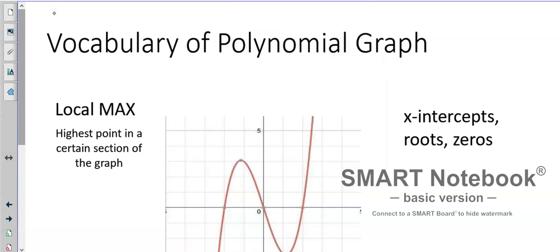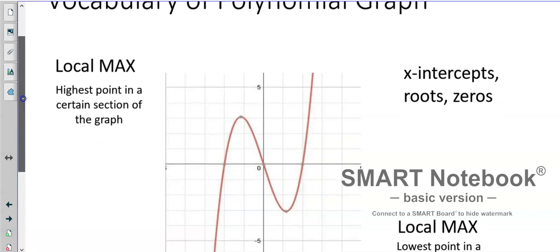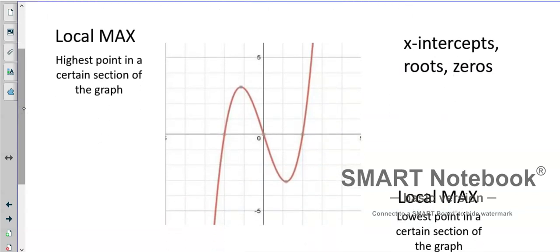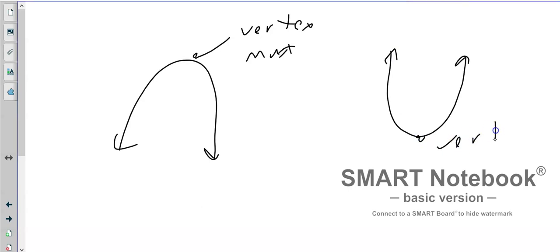All right, so vocabulary polynomial graph. We've used the word of maximum and minimum before with parabolas. We've graphed parabolas like so and said at this point right here, the vertex is a maximum. And we've graphed parabolas like this and said this point right here was a vertex and it's a minimum.